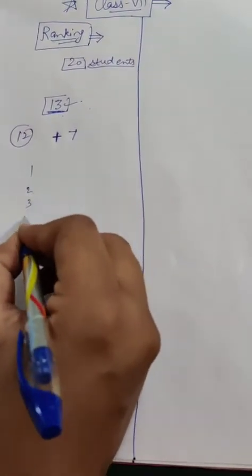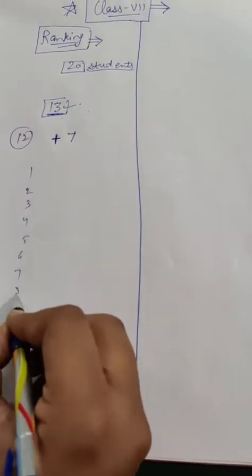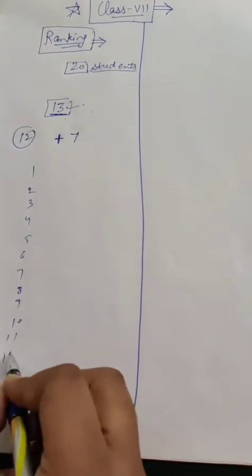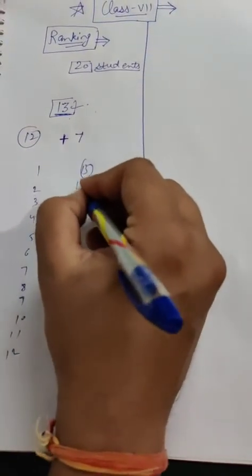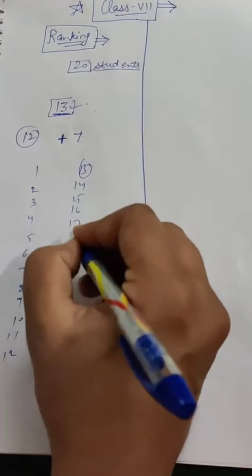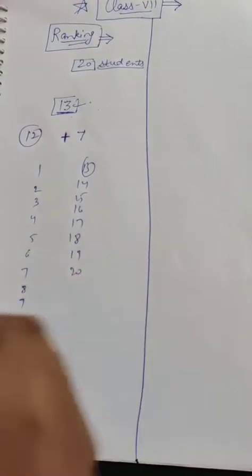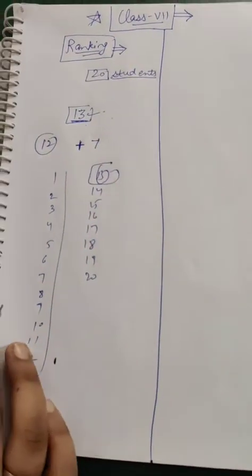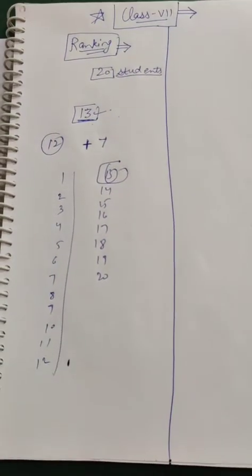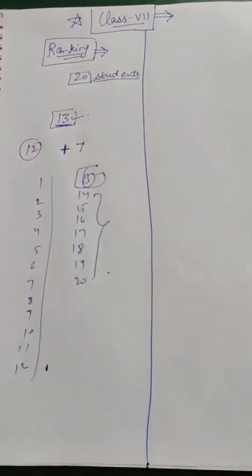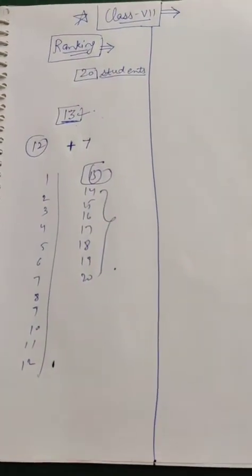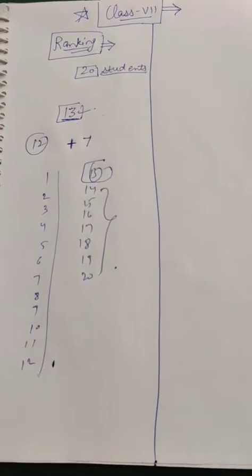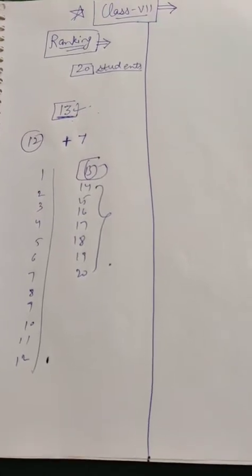1, 2, 3, 4, 5, 6, 7, 8, 9, 10, 11 and 12, then 13th is your rank. 14, 15, 16, 17, 18, 19, 20. So you can count 1 to 12, this is you and 1 to 12 is ahead of you in the class in comparison to the rank and 7 students are there. So this is a basic concept of ranking which we are going to do today.